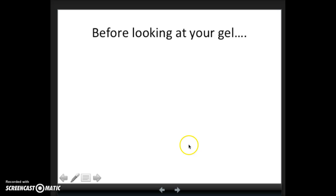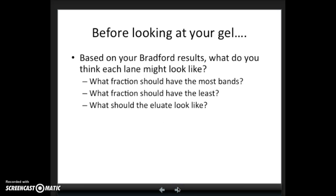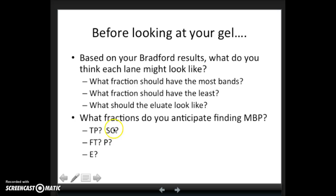Right before looking at your gel though, let's think about a few questions. Think about what you expect to see on your gels based on your Bradford results. You've looked at the protein content in each of those samples and thinking about our purification scheme. What do you think each lane might look like? Where are the most proteins? Which lanes have the least amount of proteins? What do you think the eluate should look like? Also think about what fractions do you anticipate finding our protein? Where is the maltose binding protein going to be? Think about its location in the cell and our purification scheme. Which of these fractions should contain maltose binding protein and which shouldn't?